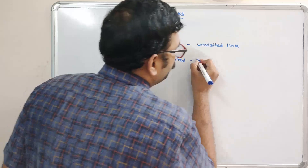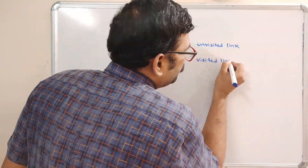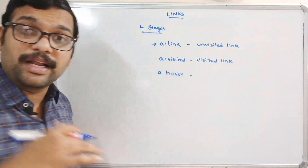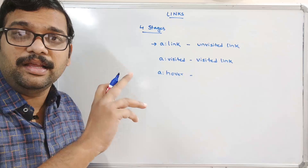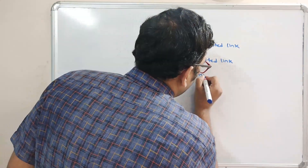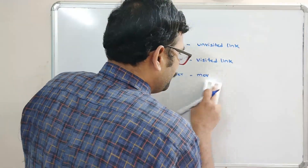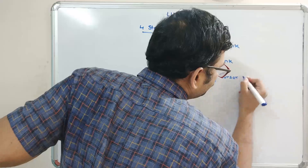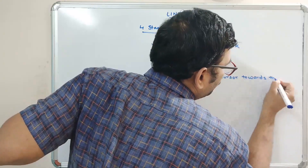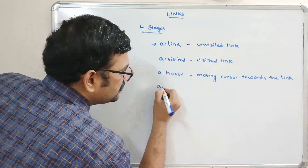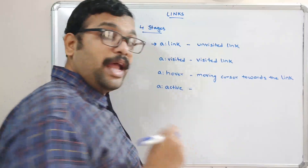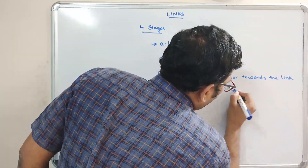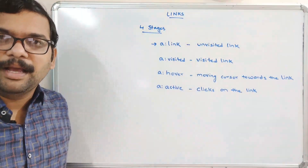The next one is 'a:visited' — that means after visiting that link, after clicking on that link. This is nothing but a visited link, after the user visits that particular link. The next one is 'a:hover' — whenever the pointer moves towards that particular link, that style will be applied. And the last one is 'a:active' — whenever the user clicks on the link.